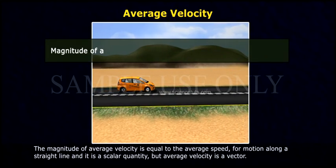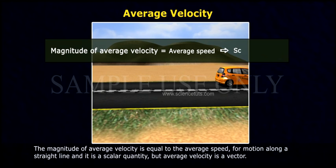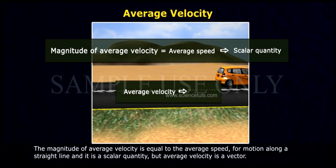The magnitude of average velocity is equal to the average speed for motion along a straight line, and it is a scalar quantity. But average velocity is a vector.